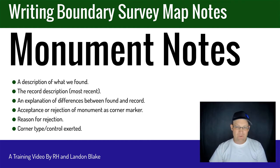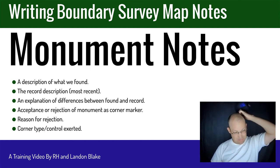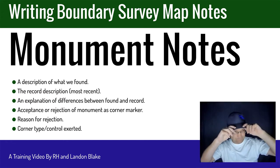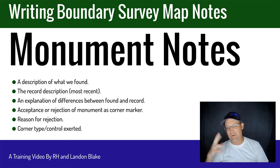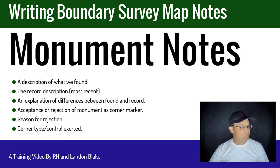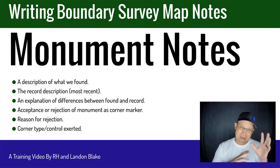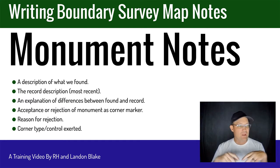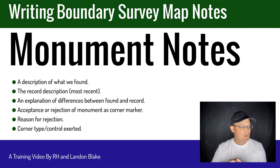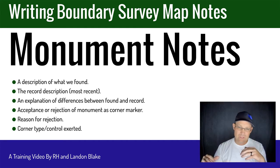Let's talk about the first kind of notes: monument notes. We have one of these for every monument we find on survey. At my shop we assign each monument a unique ID — usually starting with the letter M followed by a three-digit 500-series number, like M502. The monument note on the note sheet includes: a description of what we found during survey, the record description of what we should have found, any differences between the record and what was found on the ground, and whether we accepted or rejected the monument as the corner marker.